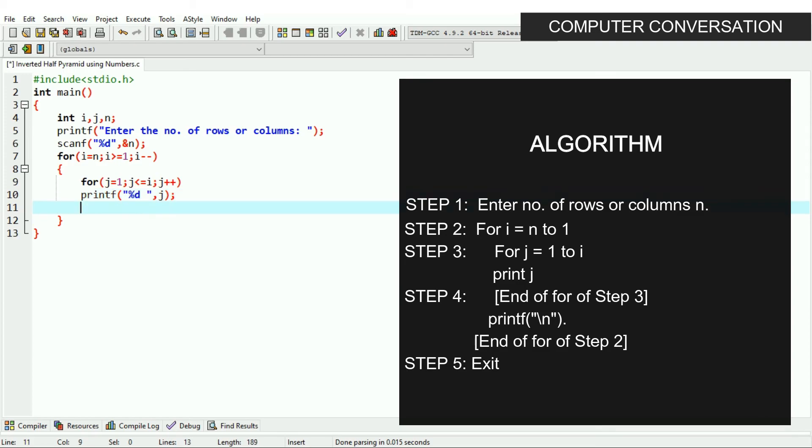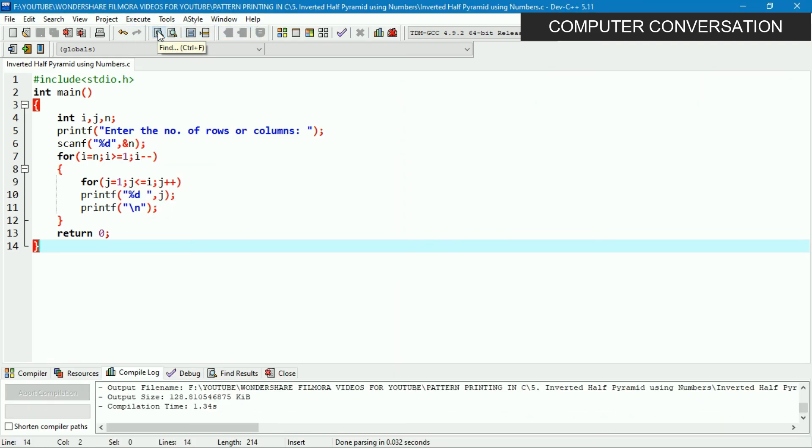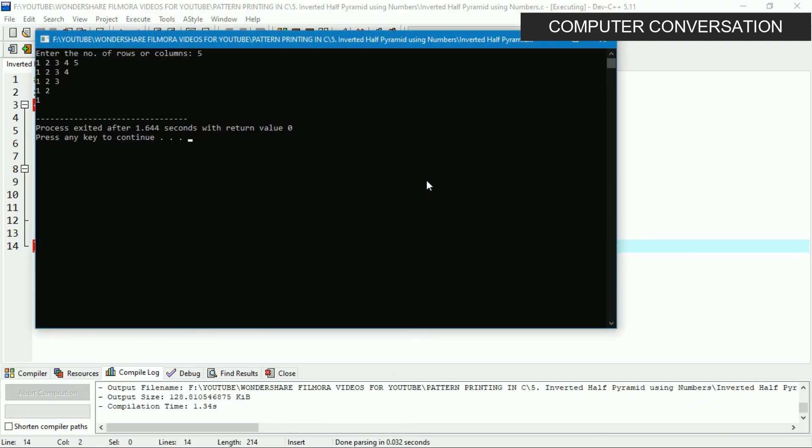After that, write printf backslash n to print a new line. Now close the brace for the outer loop and finally close the main function. The program is complete. Now let's see the output. We can see that we have completed printing our pattern successfully.